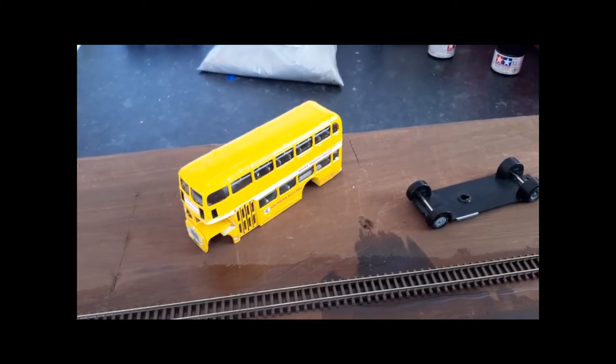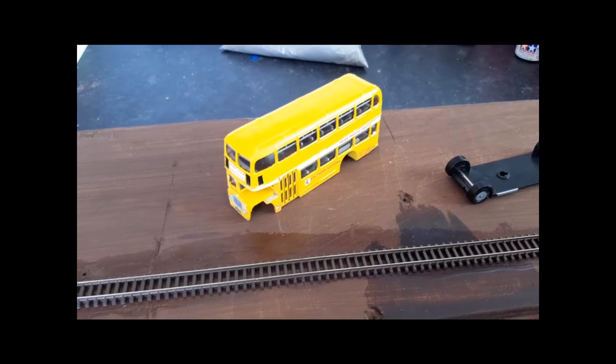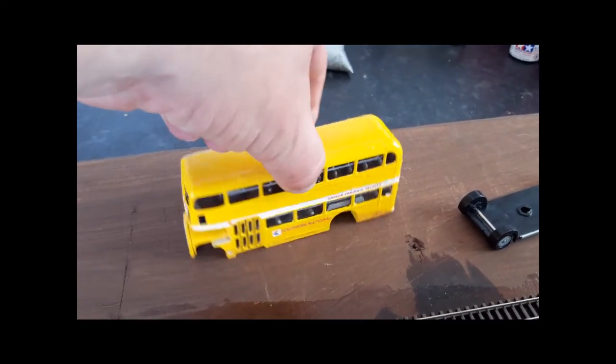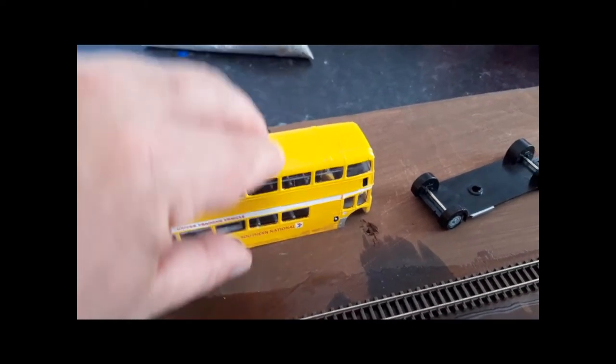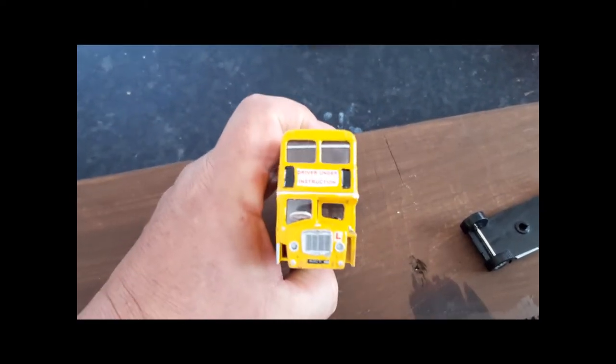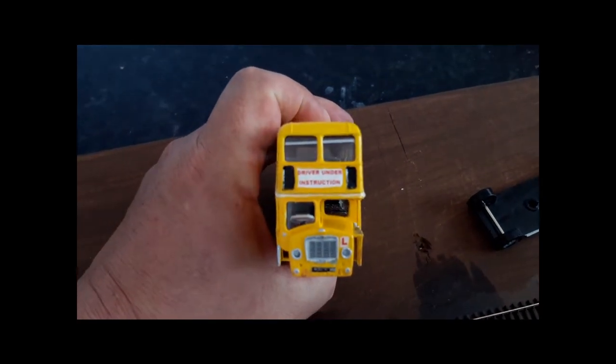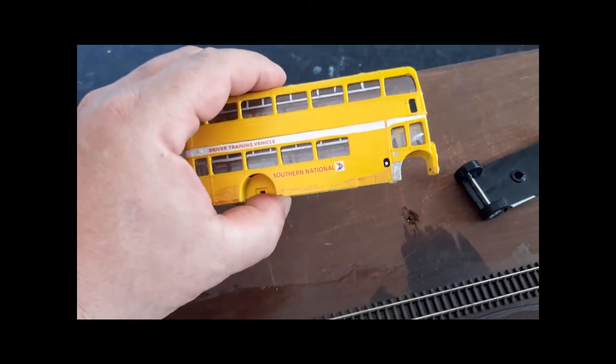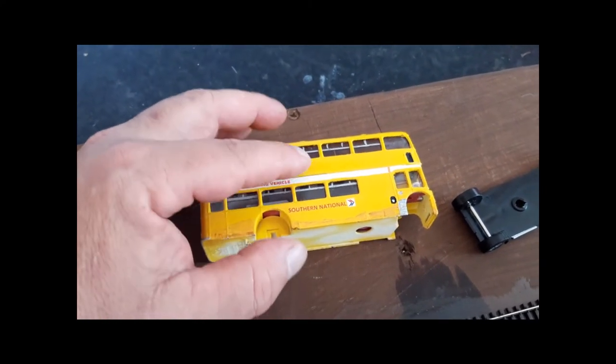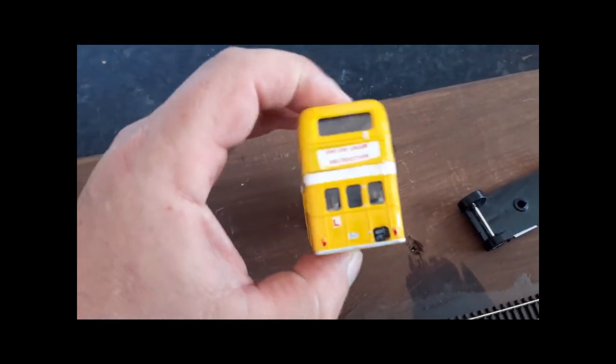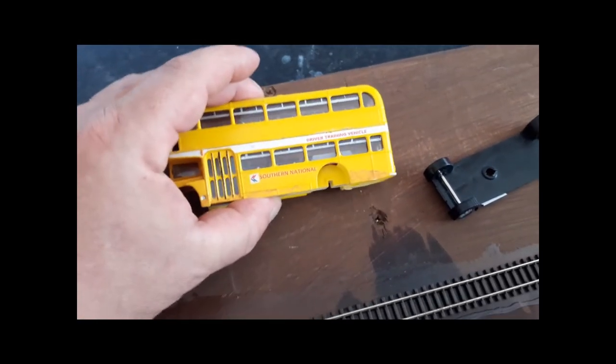So here we are. The G clamps and the cardboard are now off, and our top deck and our lower deck are glued together. The superglue method, well, I'm not truly a fan. It's one way of doing it. You do need to be careful that you don't get runs of superglue all over the windows and the bodywork. But it's done the job.